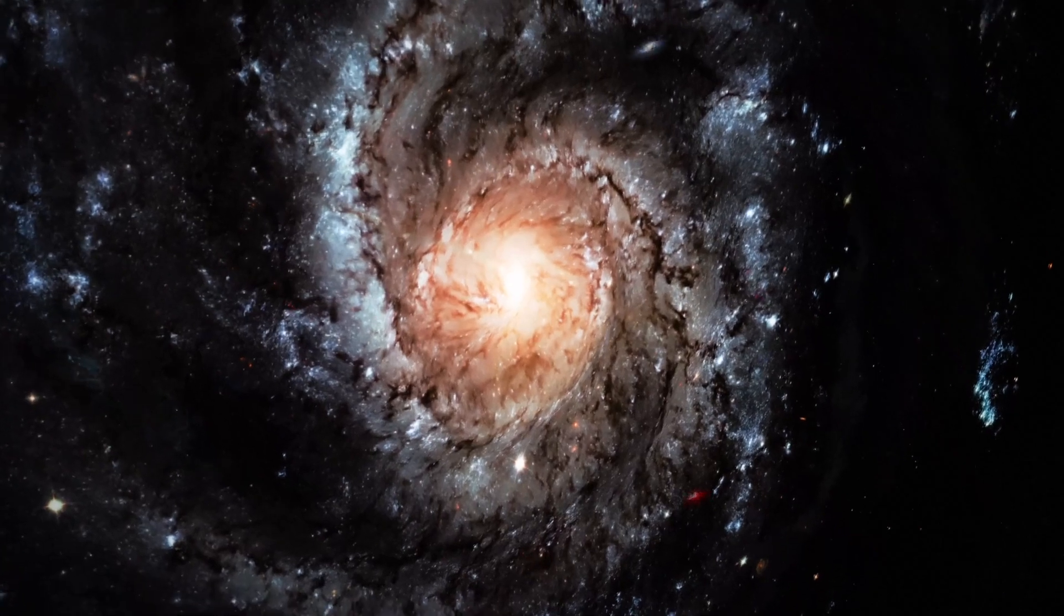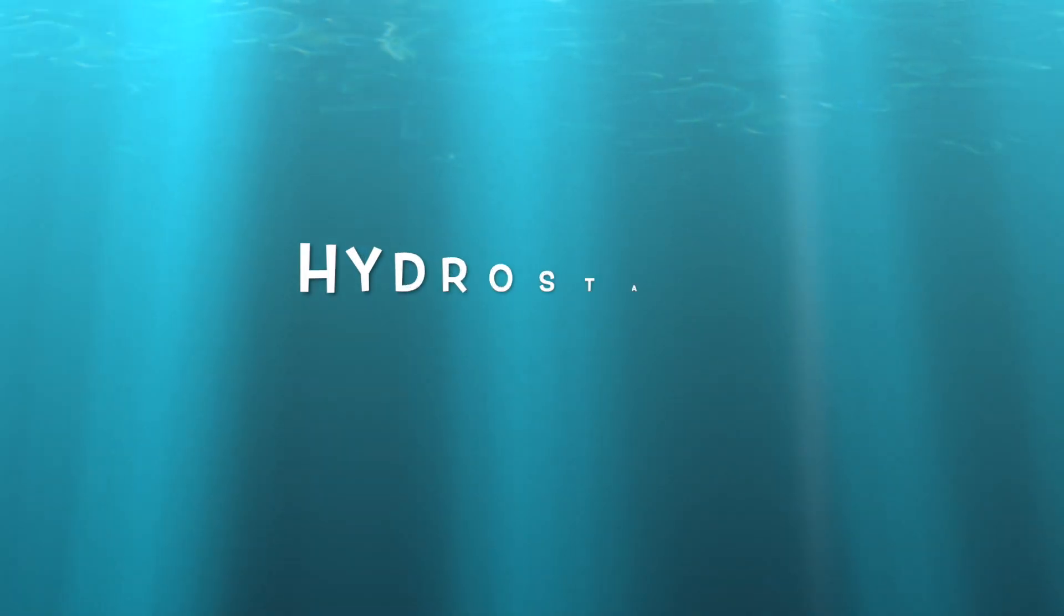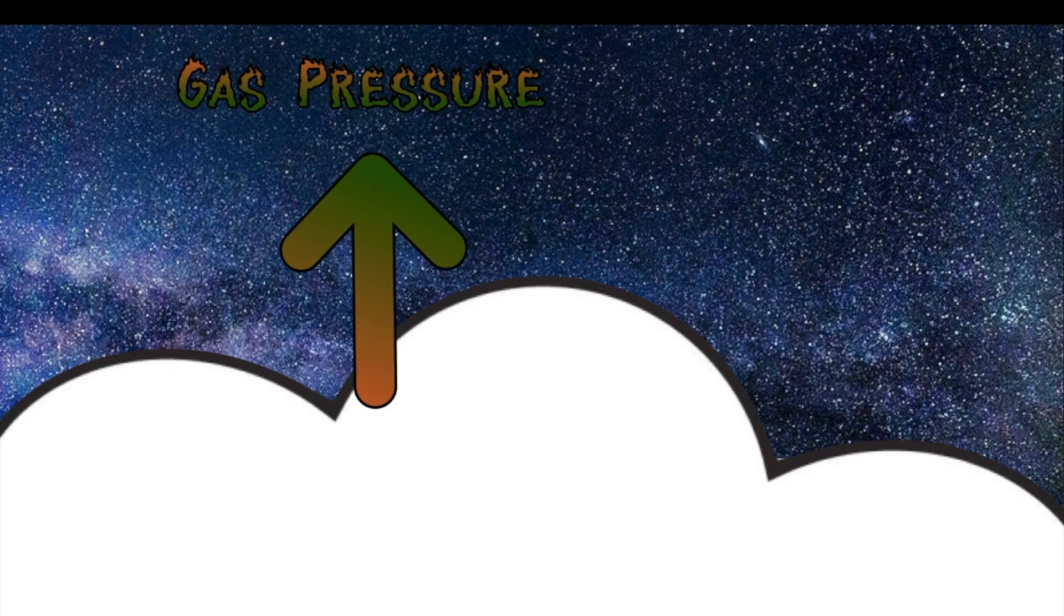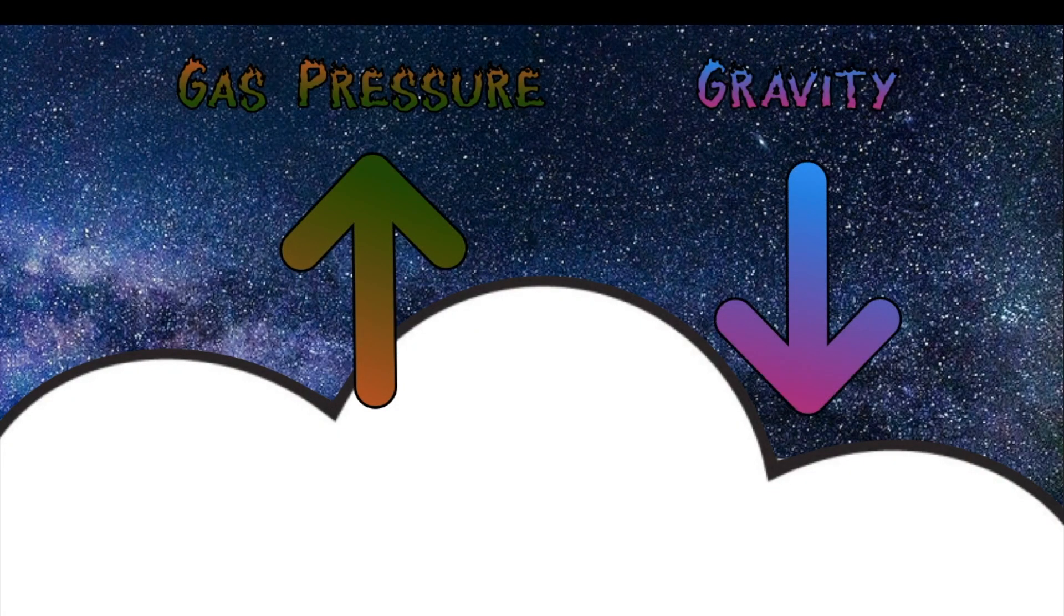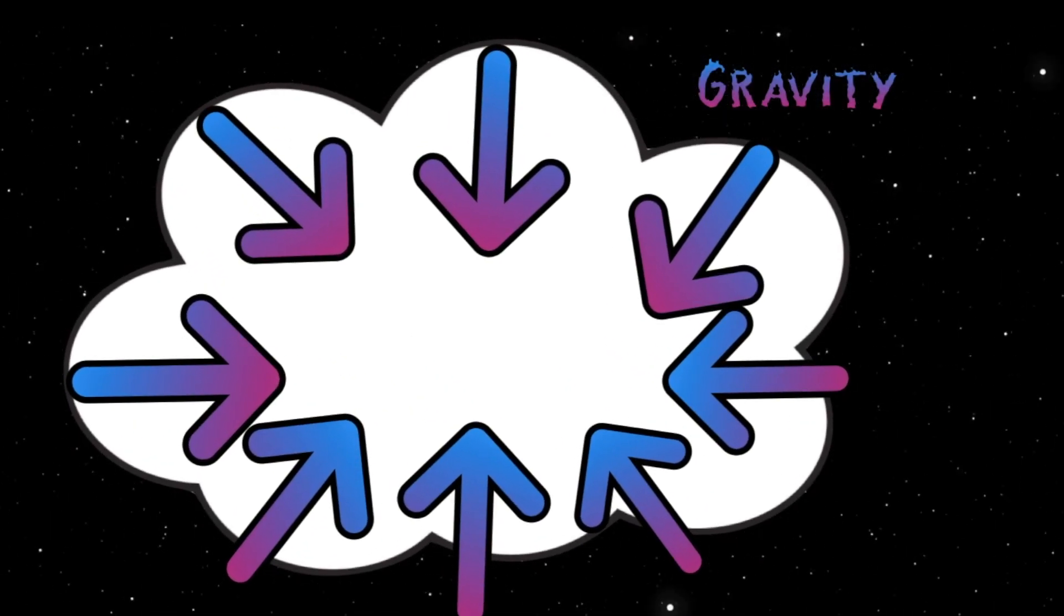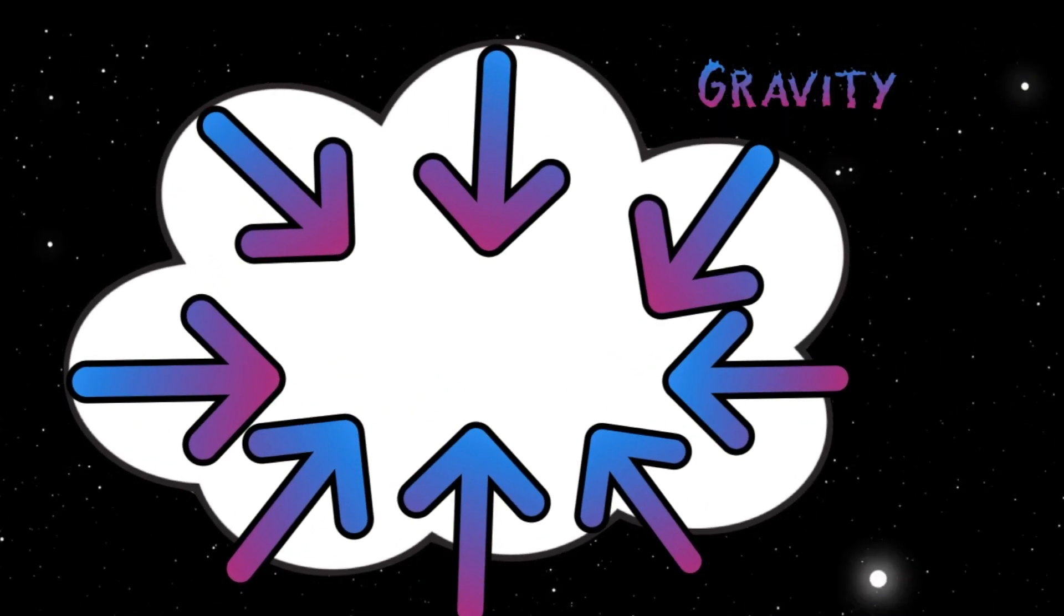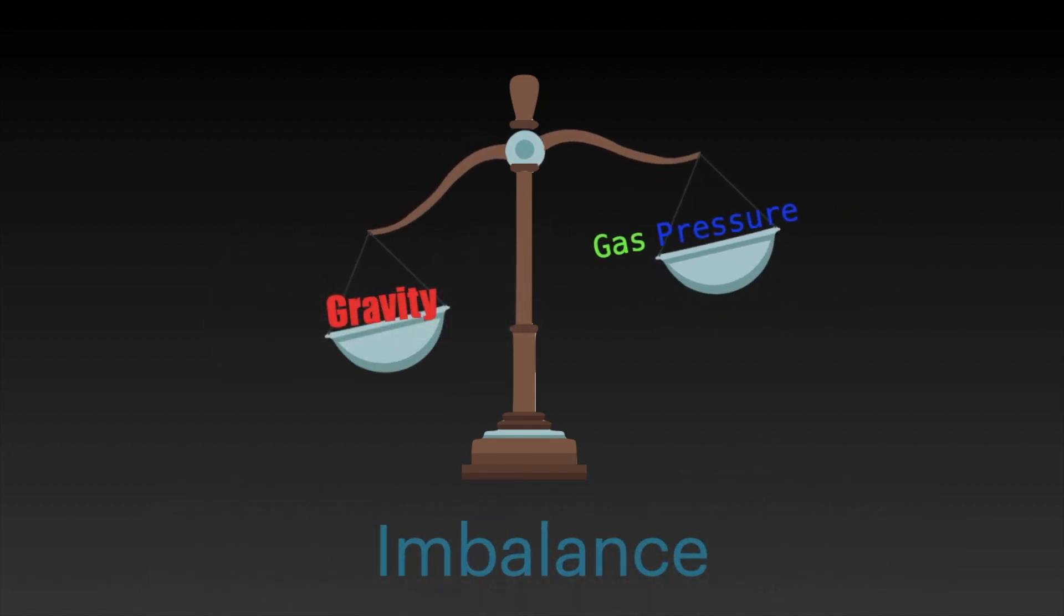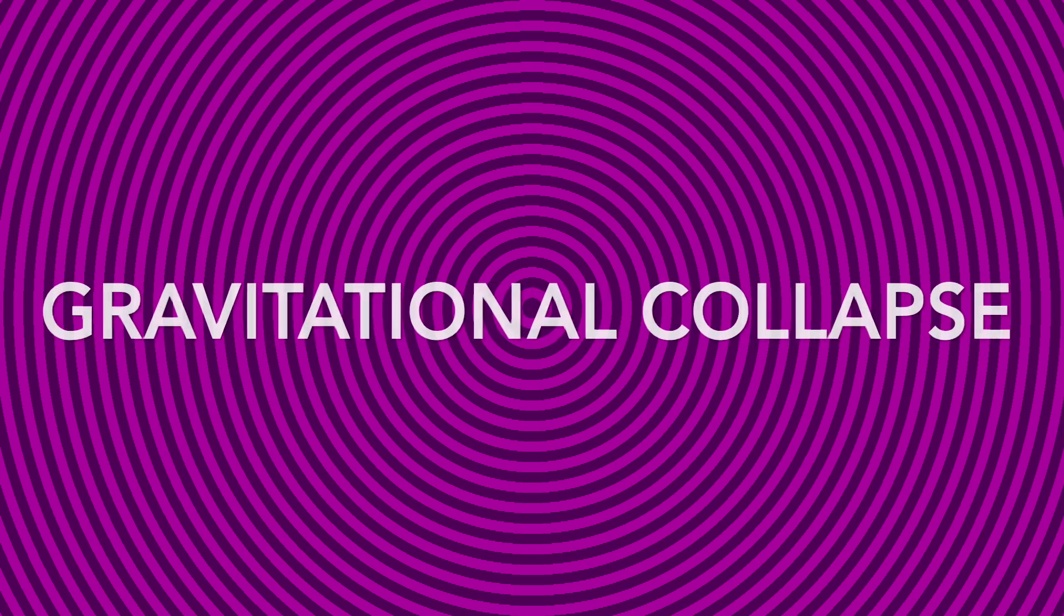The physics behind gravitational collapse lies in the hydrostatic equilibrium, the state in which the gas pressure of the cloud is in balance with the cloud's gravitational force. However, when a cloud increases in size, its gravitational force also increases, meaning that there is an imbalance between the gas pressure and the gravitational force, which causes gravitational collapse.